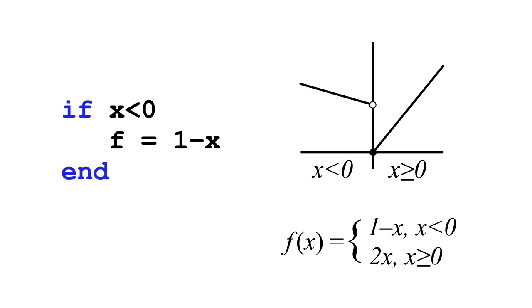To calculate the other part of the piecewise function, we can use an IF ELSE statement, as shown. Any time the IF condition is false, the code in the ELSE block will be executed.